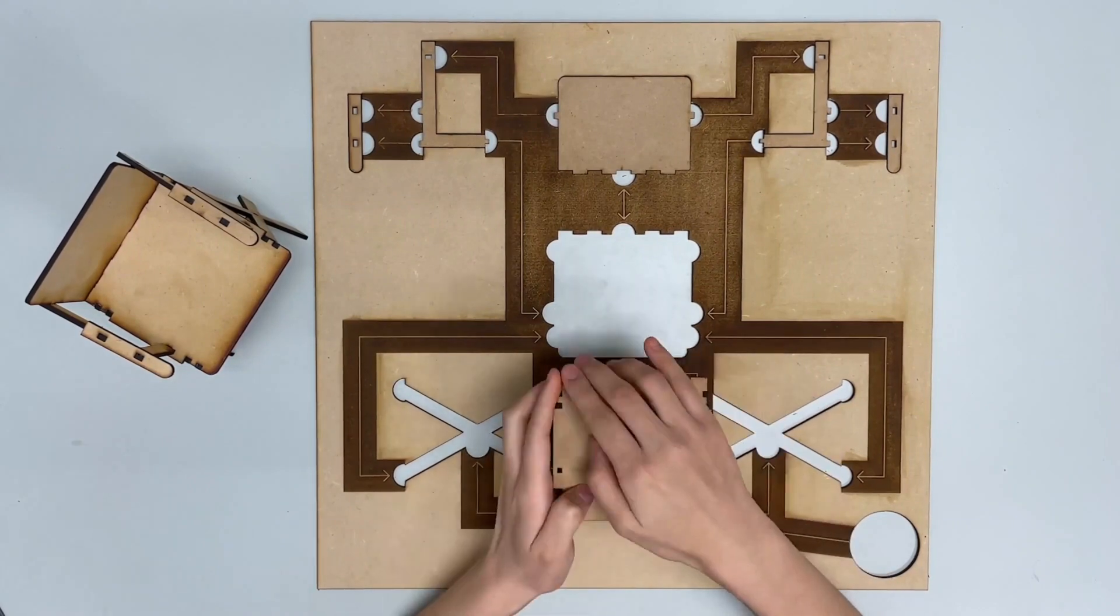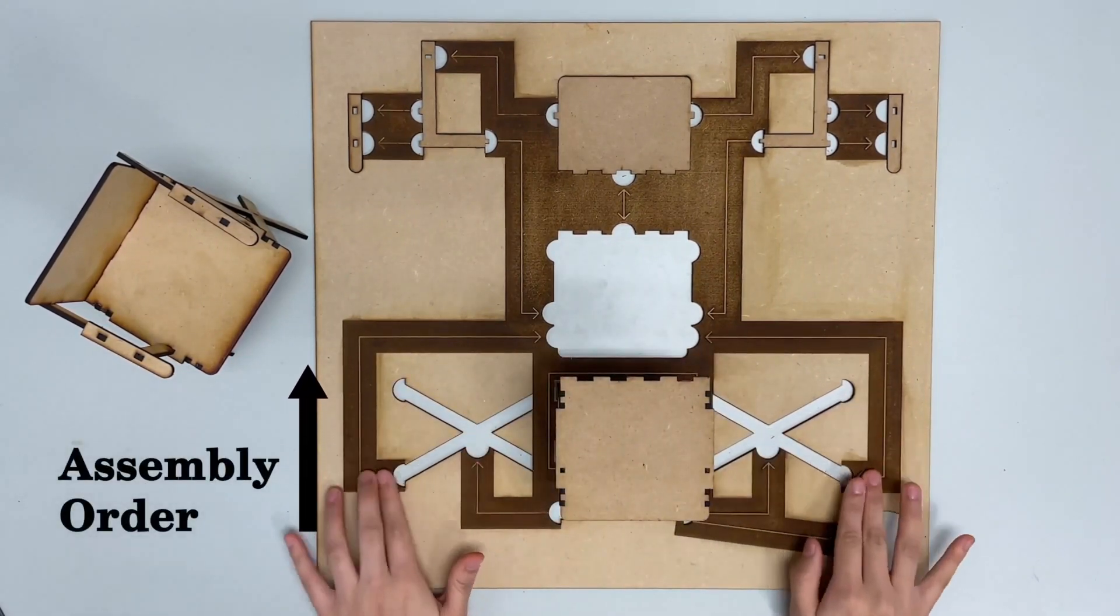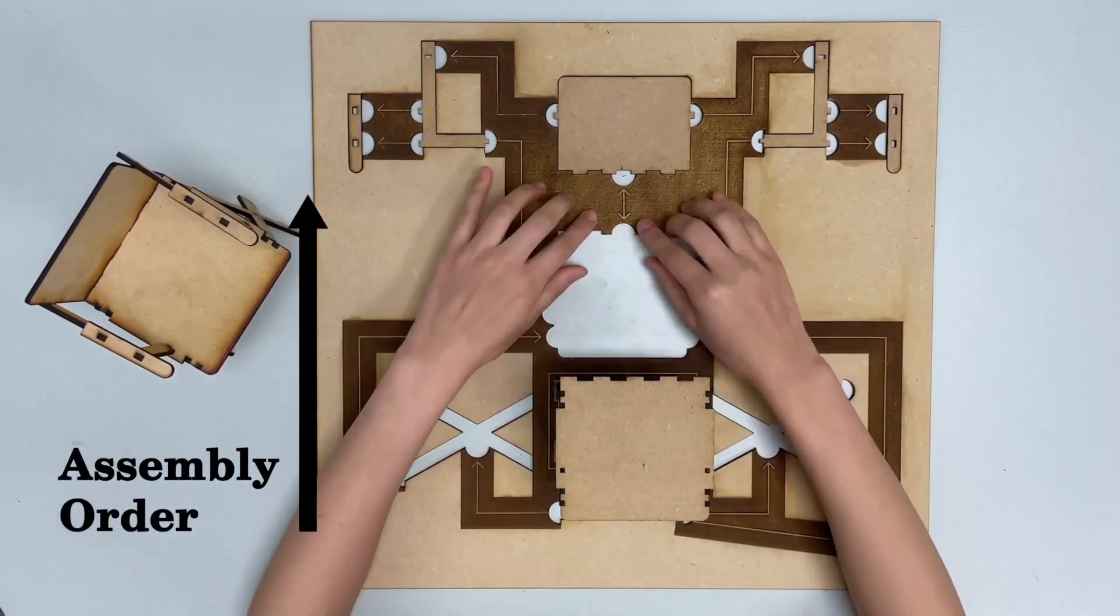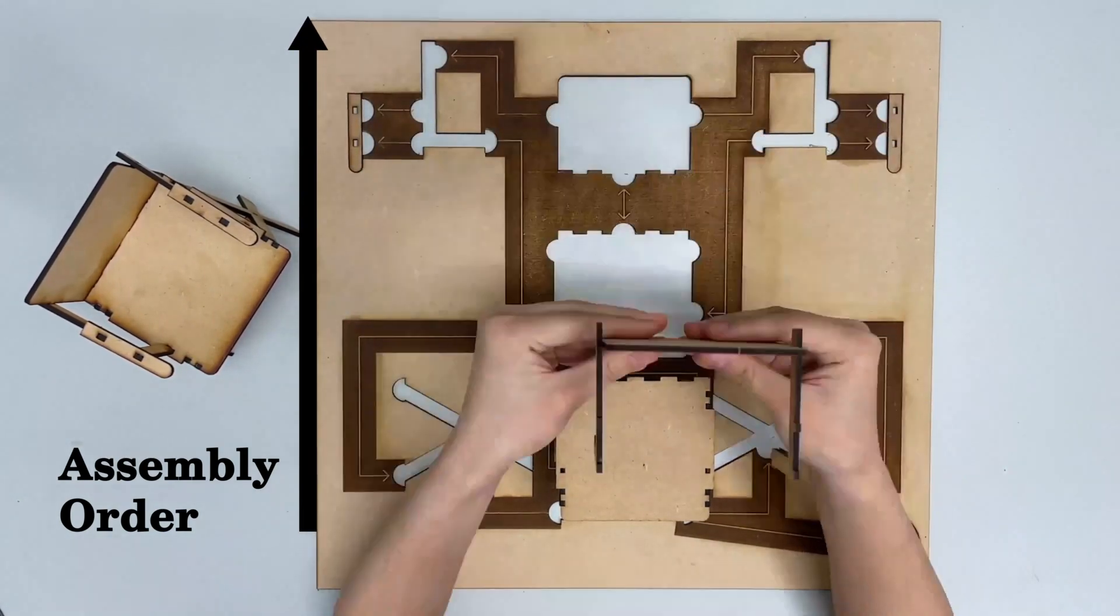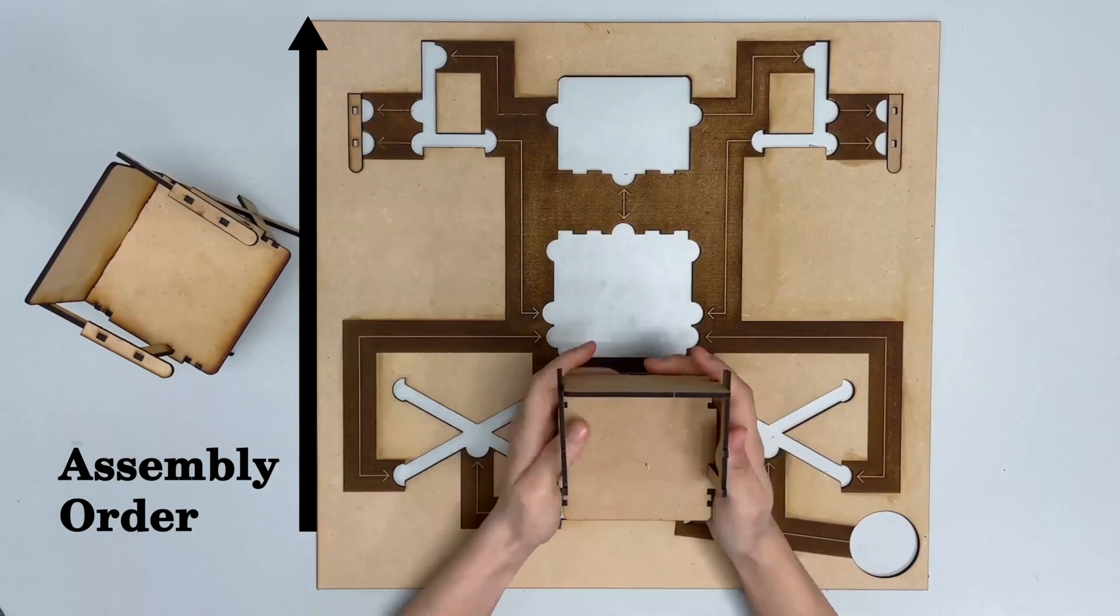The assembly order is specified based on components proximity to the user. If the user loses track of the tactile hints, they can put the model back into the plate to reaccess those tactile hints.